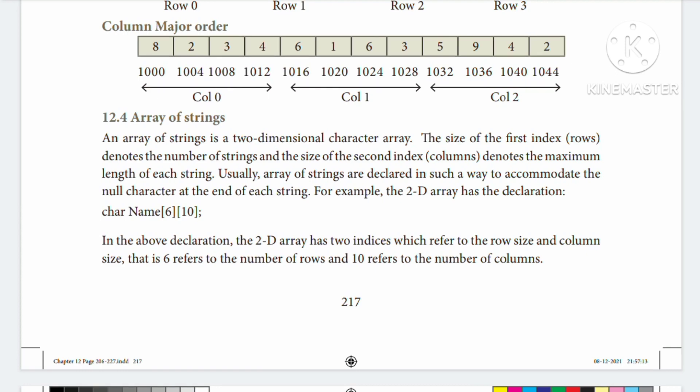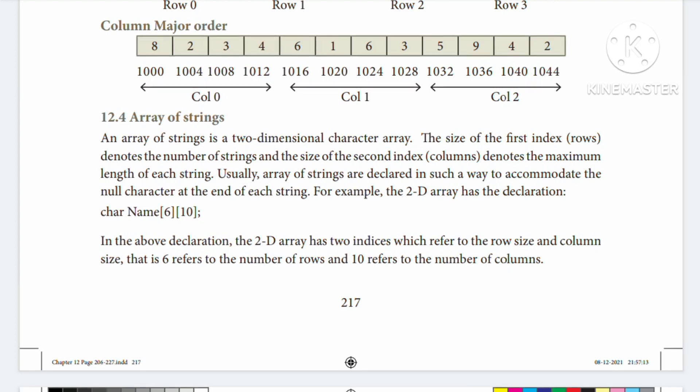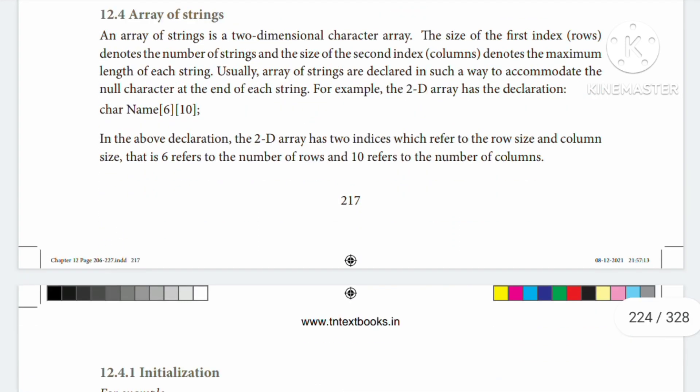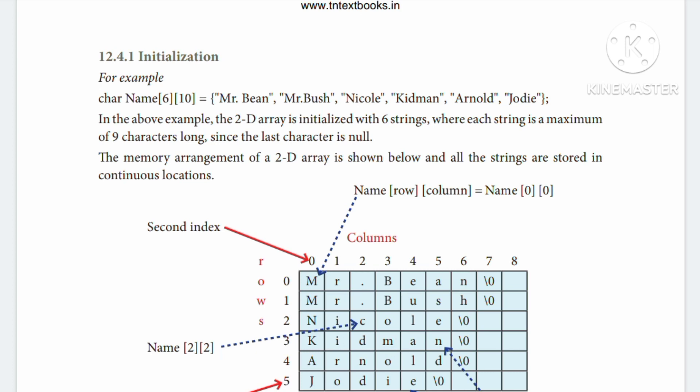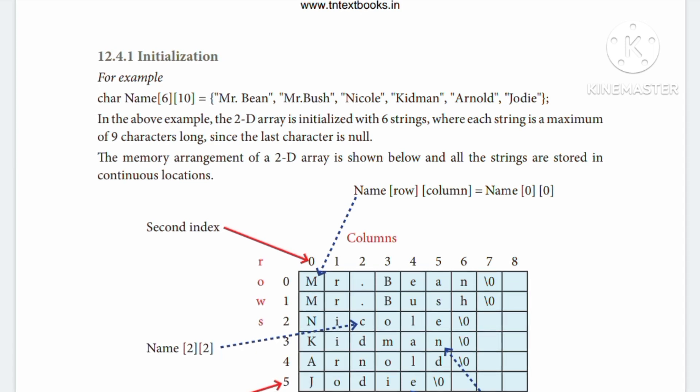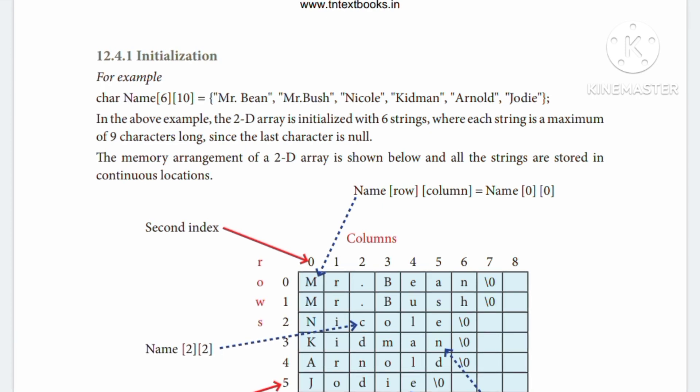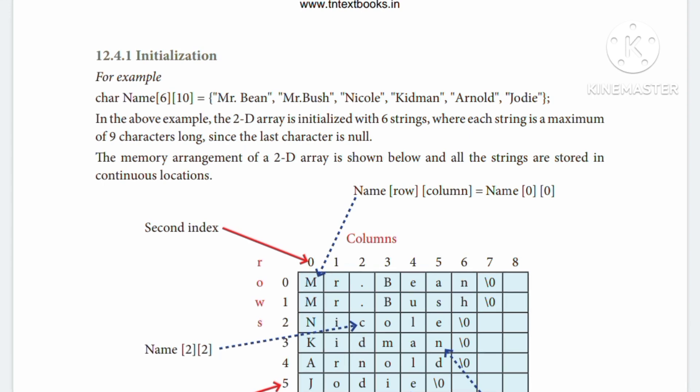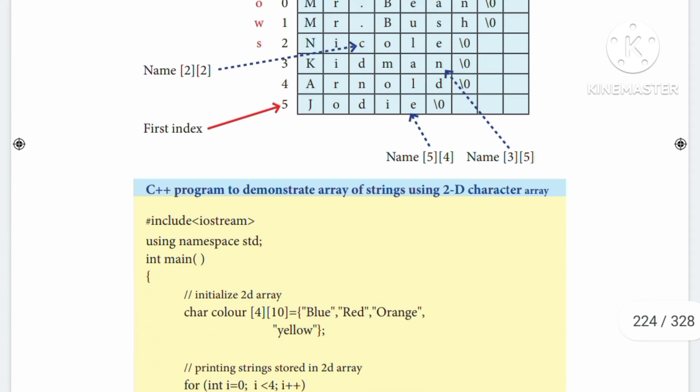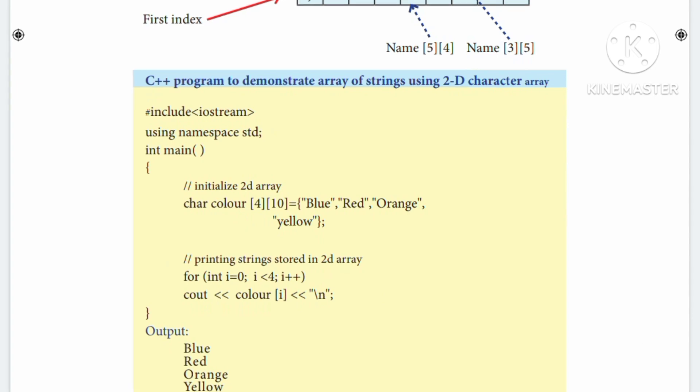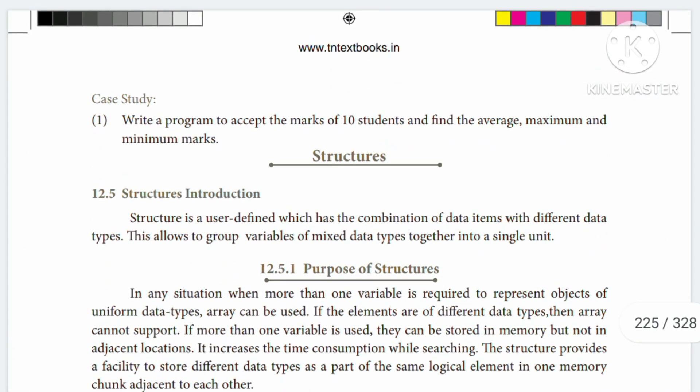Now we'll see strings. Strings are created using characters. We've already seen single dimension character arrays for strings. Now we'll see two dimensions. For example, char name[6][10] means 6 rows and 10 columns. Each row can store one string. So M is at position [0][0], R is at [0][1], and so on. The last character is usually null value. This is how we store and access strings in 2D arrays.